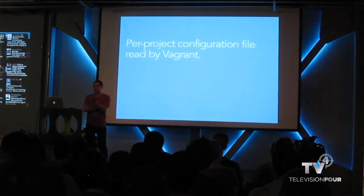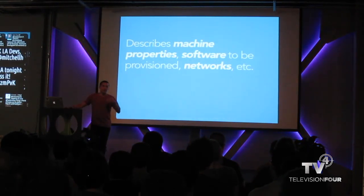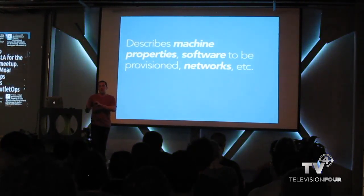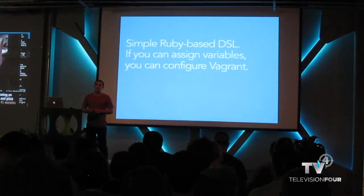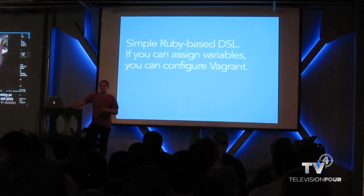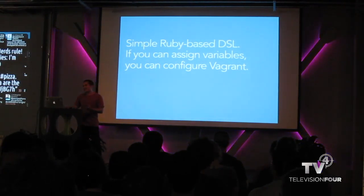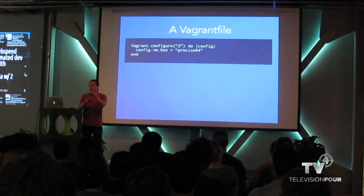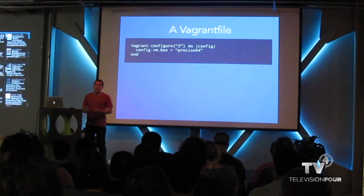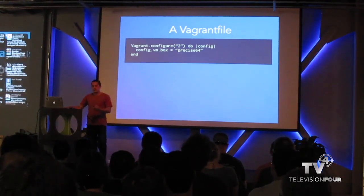The Vagrantfile is per-project configuration read by Vagrant to build your dev environment. It describes machine properties, networks, etc. — basically a single file that describes everything needed to create the running environment, from RAM to how you want to access it to Apache configurations. It's a Ruby DSL, but you don't need to learn Ruby — as long as you can assign variables, you know enough to get going. You can pretend you're not using Ruby.